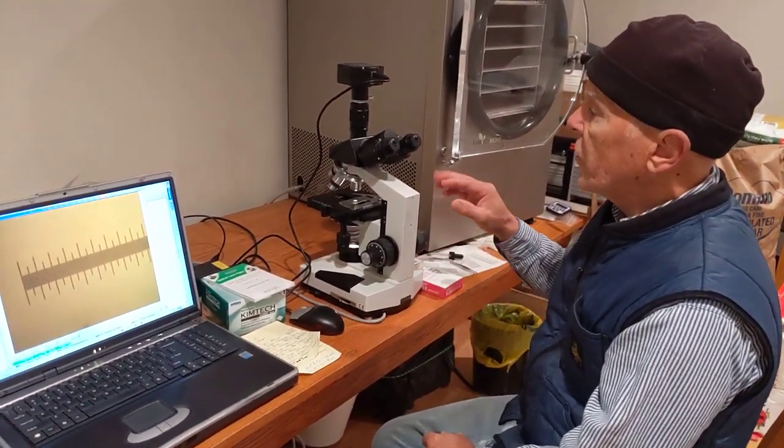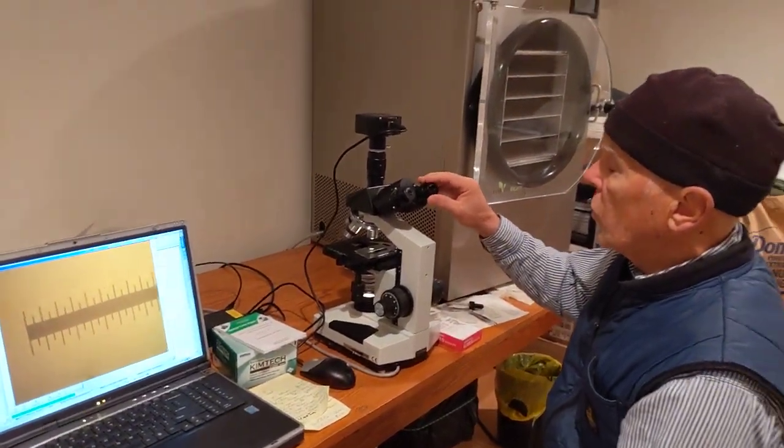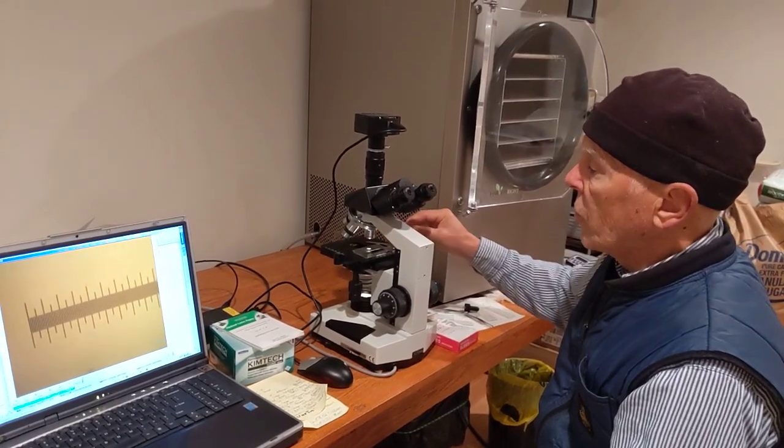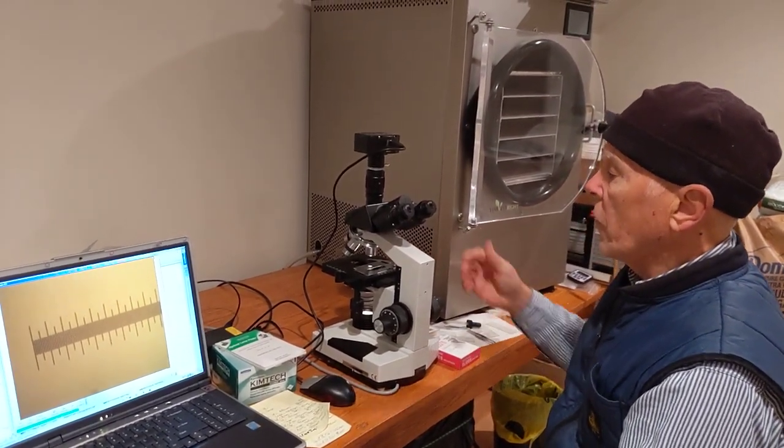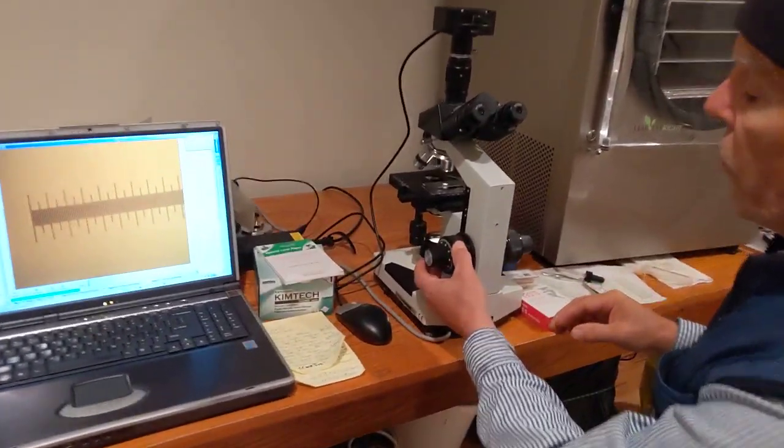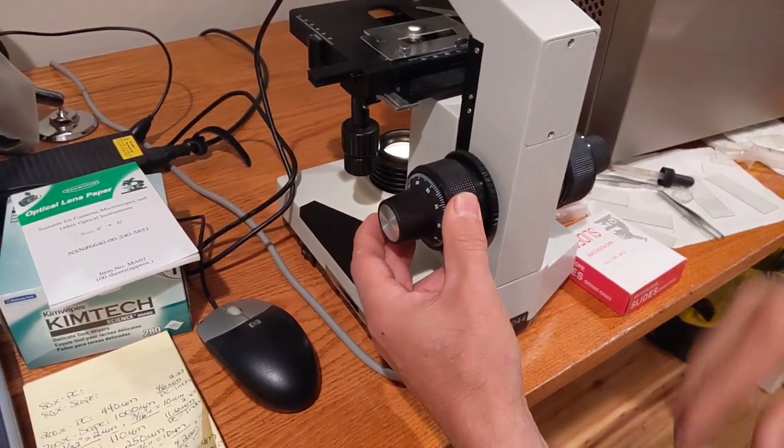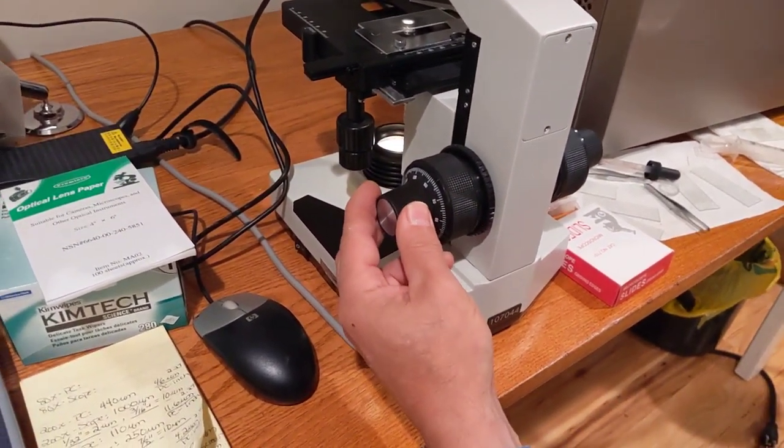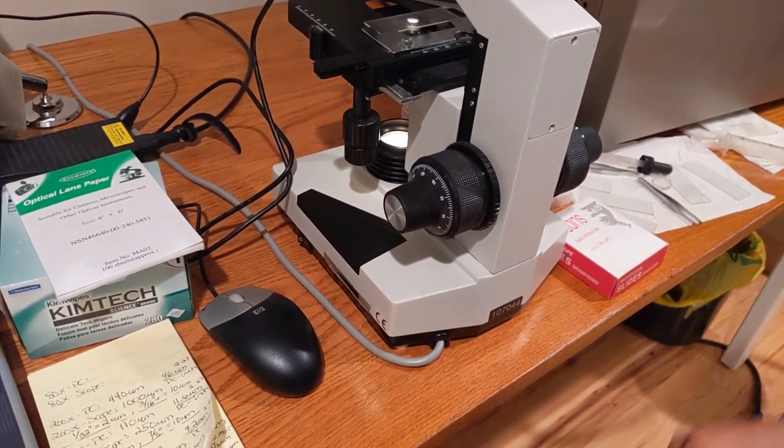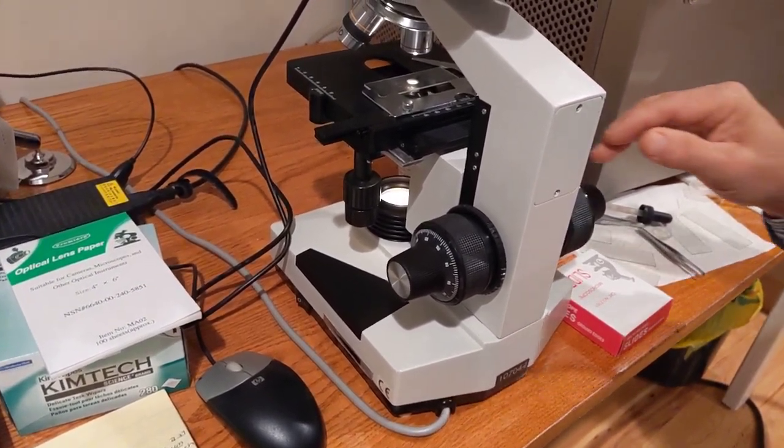So then in terms of setting up the microscope, you pick your eyepieces, you set your lens to the most coarse—in this case a 10x lens—and you've got your coarse adjustment here, which is the large dial. It moves the whole header lens assembly up and down. And then you've got your fine adjustment—once you get in close, you use your fine adjustment with this dial.